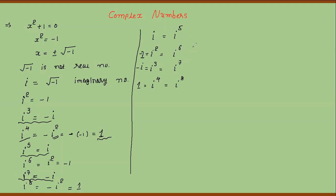If iota⁸ = 1, then iota⁹ = iota, iota¹⁰ = -1, iota¹¹ = -iota, and iota¹² = 1. And this process will keep running.